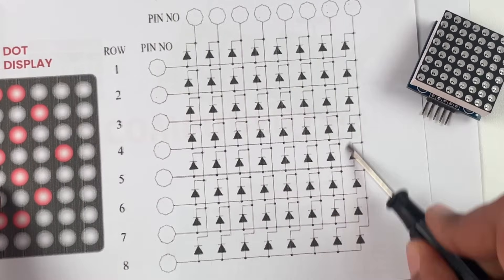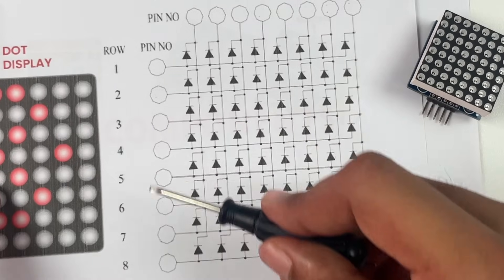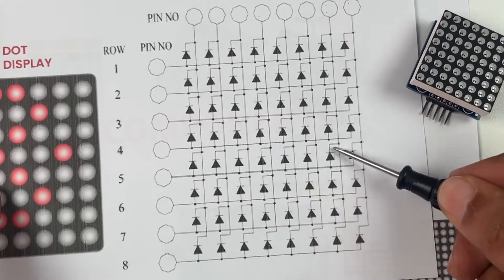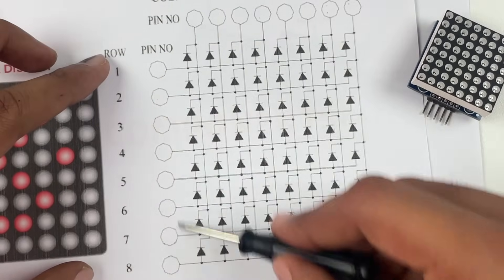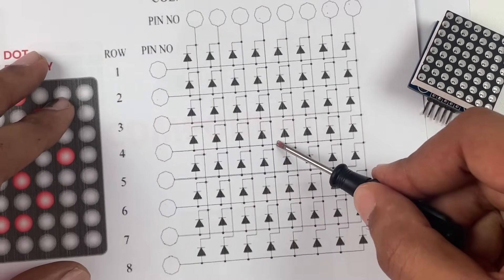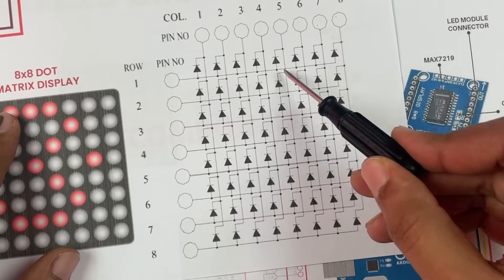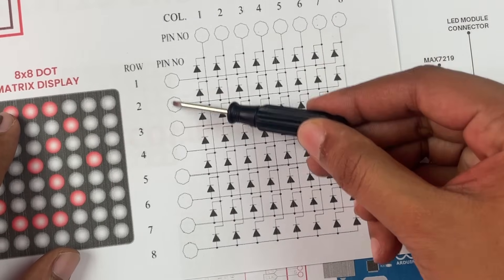Similarly for any LED in this matrix, if we know the row number and the column number we will be able to turn on that particular LED. So this is how we can just use 16 pins to control 64 LEDs. Interesting, right?